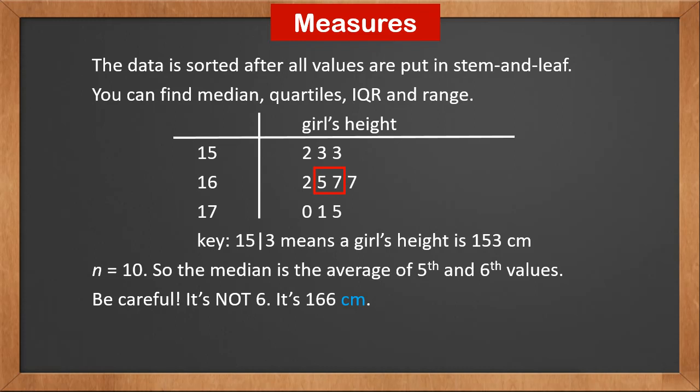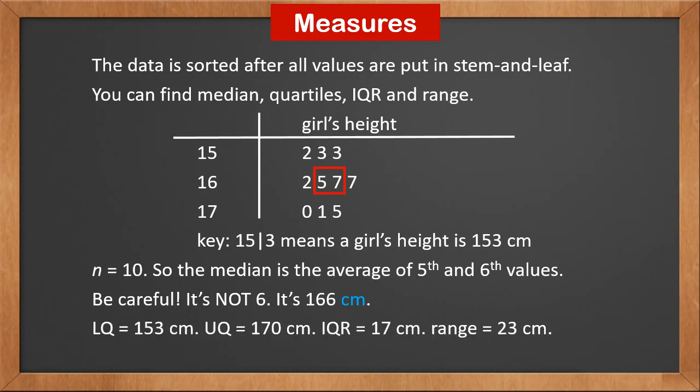Similarly, we can find other measures. The lower quartile is 153 centimeters, the upper quartile is 170 centimeters, the interquartile range is 17 centimeters, and the range is 23 centimeters.